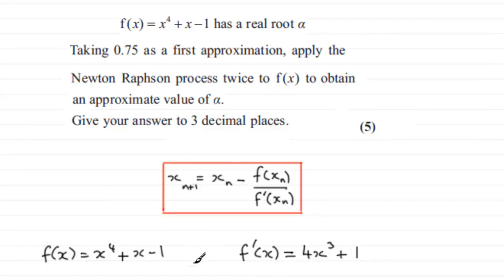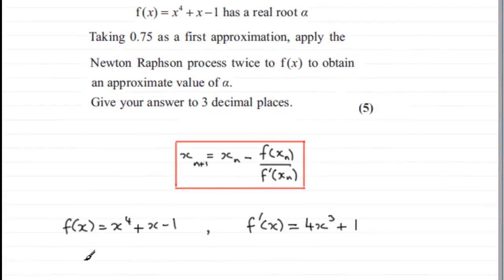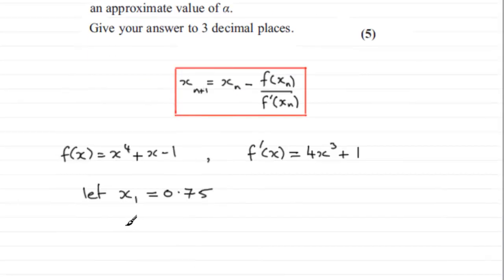So if we take our first approximation, let's call it x1. Let's say let x1 be that first approximation. We're going to say it's 0.75. Then we can use a typical scientific calculator